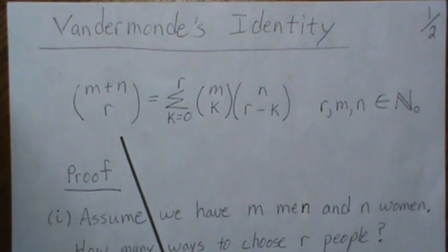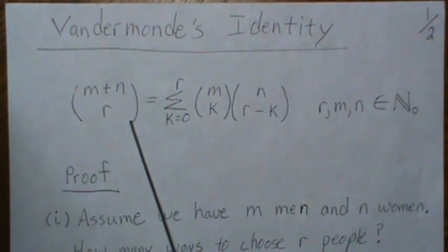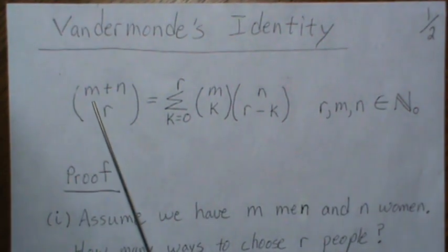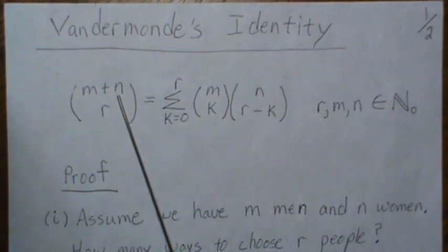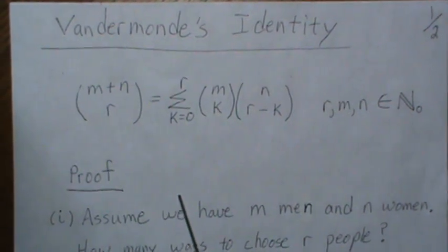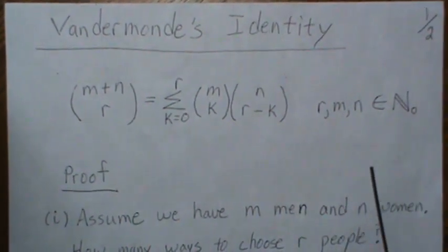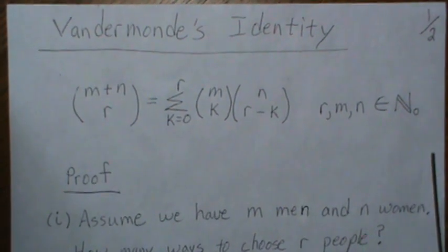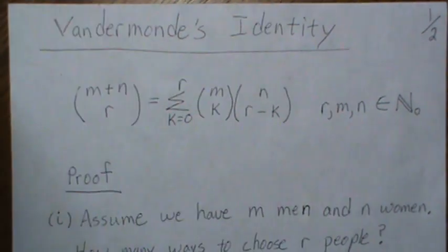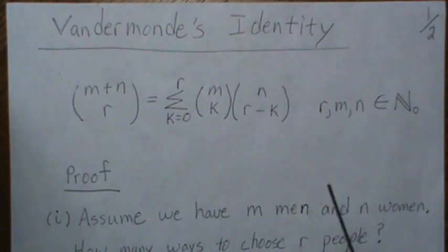Vandermonde's inequality says that this holds, where this is the normal combinations: m plus n factorial divided by r factorial times m plus n minus r factorial. We're going to give two proofs, one more of a statistical proof and the other more mathematical.